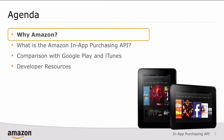I'll start off by giving you some examples in the Amazon App Store today, as well as some information about popular categories for in-app purchasing. I'll show you where to get the in-app purchasing SDK and compare it with the Google Play and iTunes stores where you may have already submitted apps. Finally, I'll end this video with links to additional developer resources that you can use to go deeper into the code.